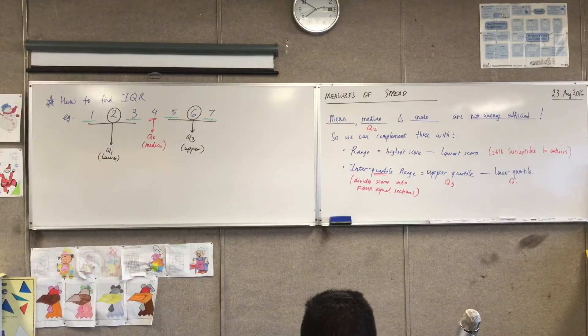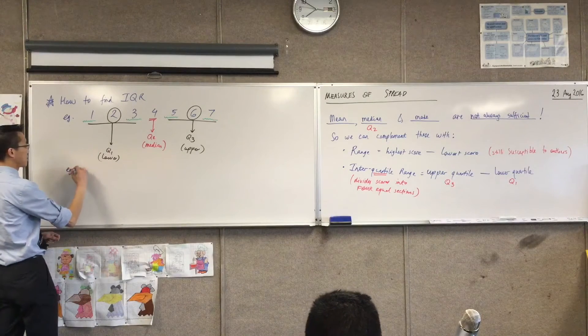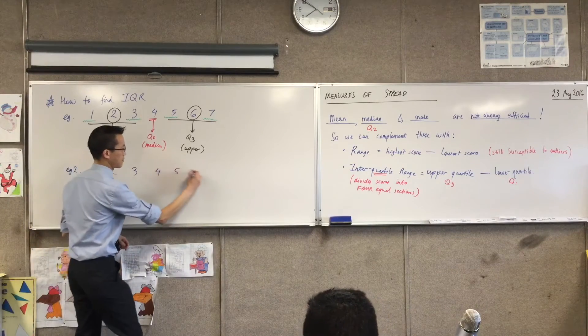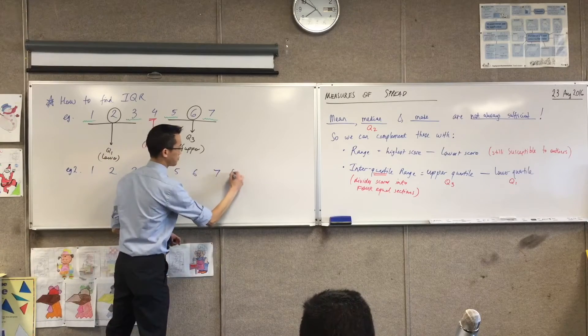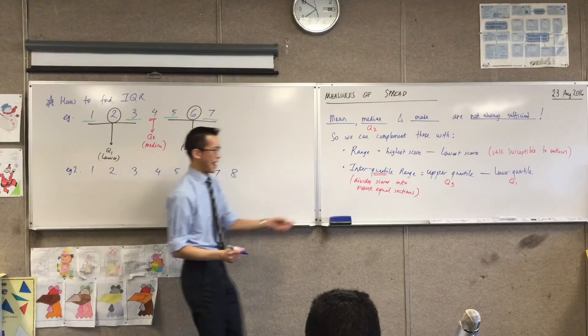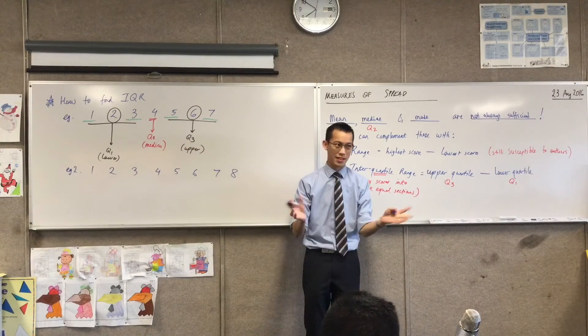So write another example for me underneath this. Let's just add a score. Also, before we start doing this, we found the quartiles, but I haven't actually calculated the interquartile range, have I? What's the last step that's missing? It's the easiest step, actually.